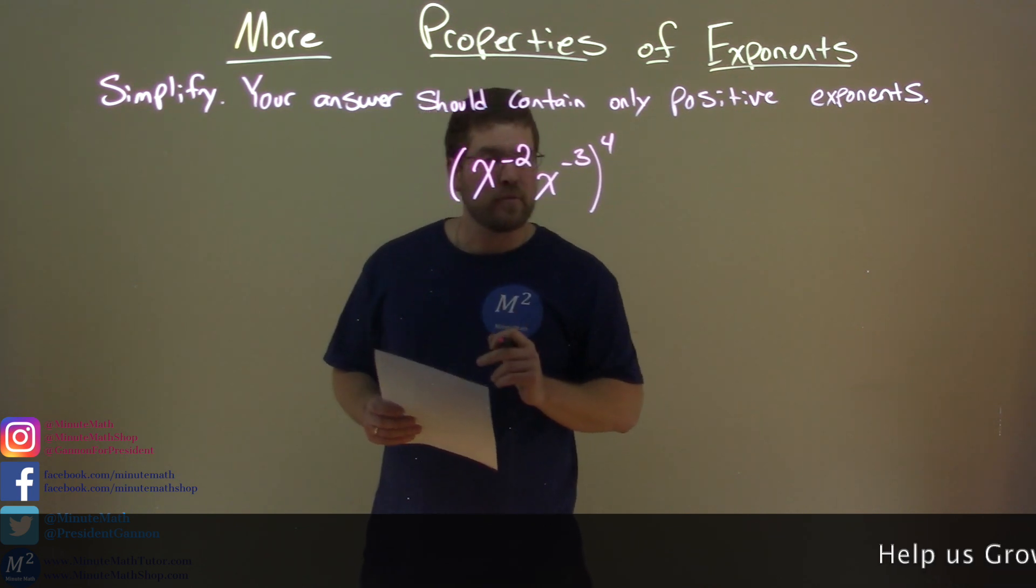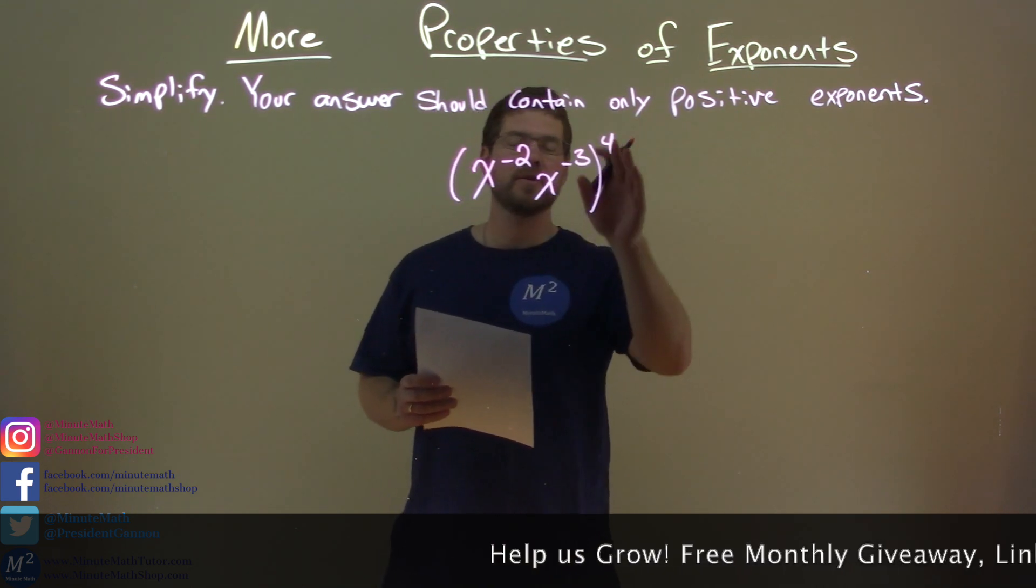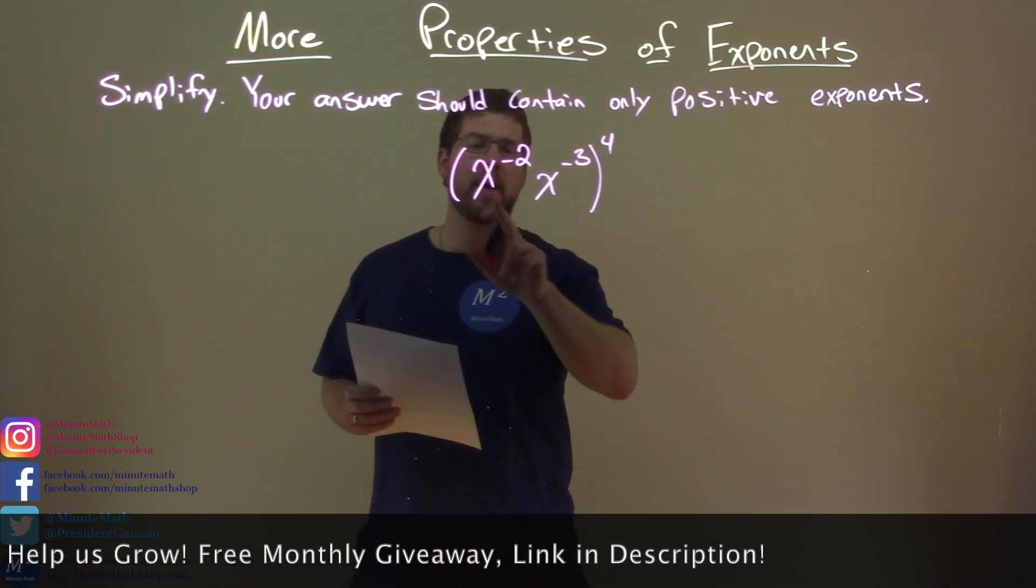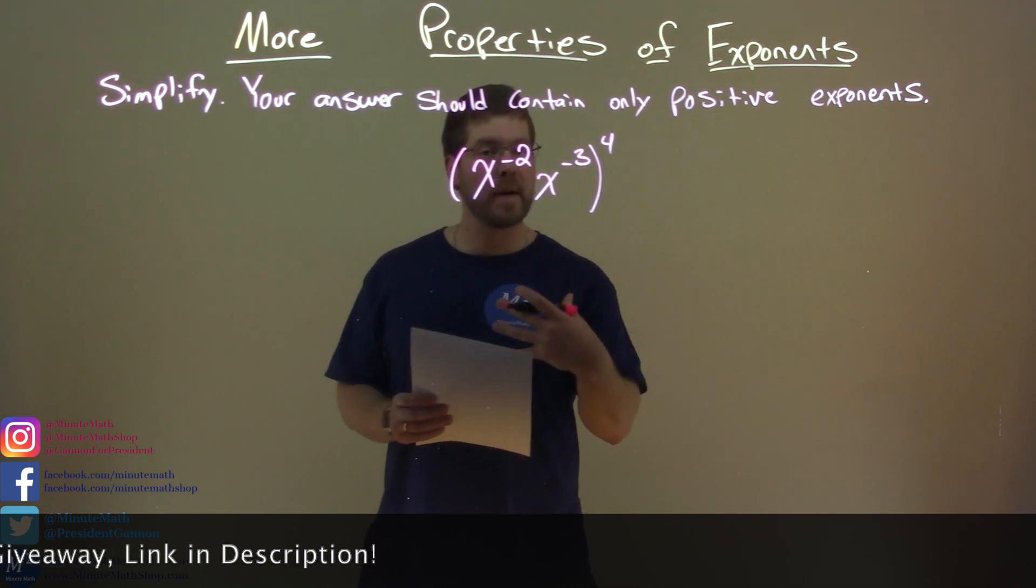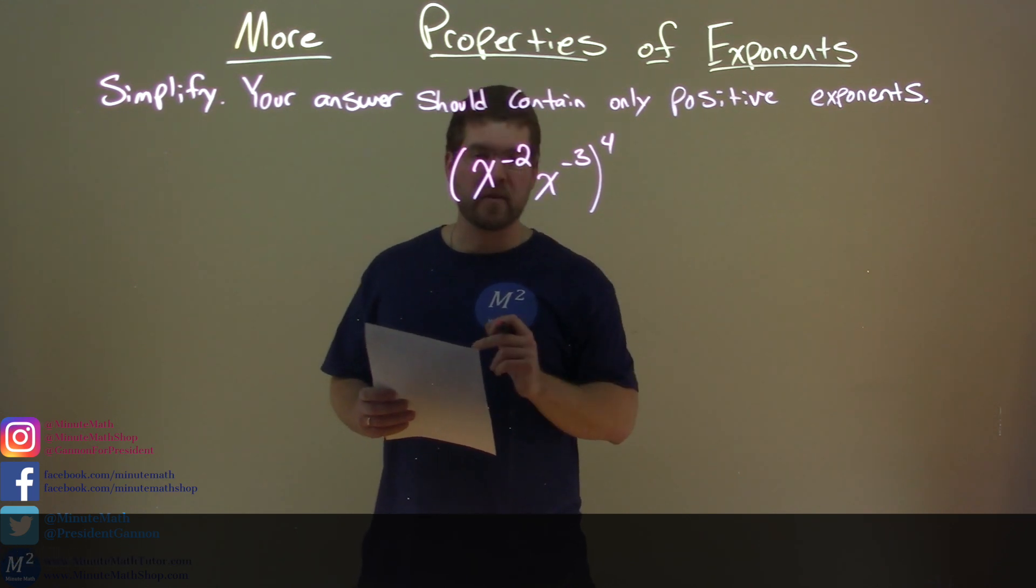x to the negative 2 power times x to the negative 3rd power, all to the 4th power here. So what do I want to do? Inside my parentheses, first, let's simplify that. We have the same base, we can combine that. When we multiply the same base, we add the exponents.